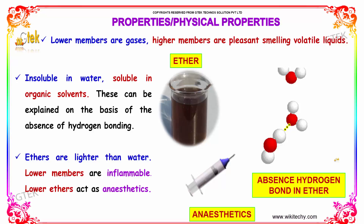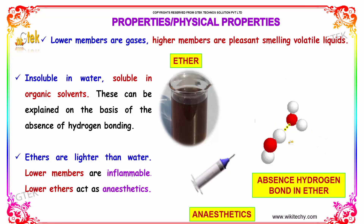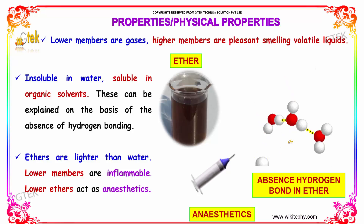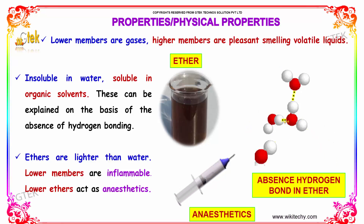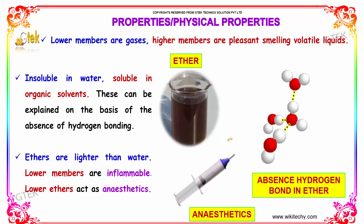Physical properties of ethers: lower members are gases, while higher members are pleasant-smelling volatile liquids. They are insoluble in water but soluble in organic solvents, which can be explained on the basis of the absence of hydrogen bonding. Ethers are lighter than water. Lower members of the ether family are inflammable, and lower ethers also act as anesthetics.